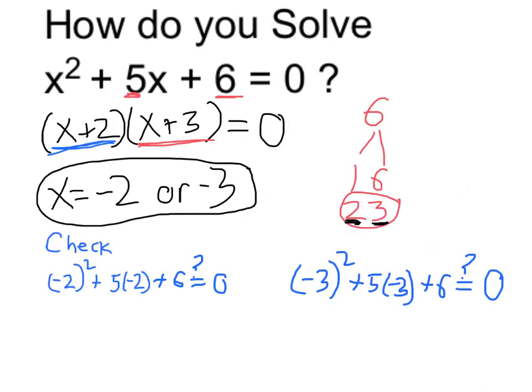So I believe I have my solutions. Let me just do a quick check to confirm that it does work. If I were to put negative 2 into here, I would get negative 2 squared, which is 4. Negative 2 times negative 2 is positive 4, plus negative 10, plus 6. And I want to know if that's equal to 0. Well, 4 plus negative 10 is negative 6, and yes, negative 6 plus 6 is equal to 0. So this first solution checks out.